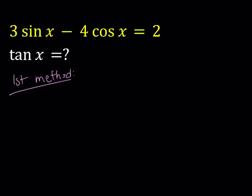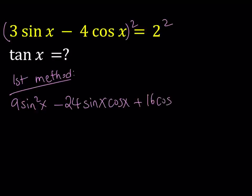The first method involves squaring both sides. Let's go ahead and do that. This gives us 9 sine squared x minus 24 sine x cosine x plus 16 cosine squared x equals 4. At this point, you can do a couple different things, such as replacing cosine squared with 1 minus sine squared. But I'll follow a slightly different approach for the first one.